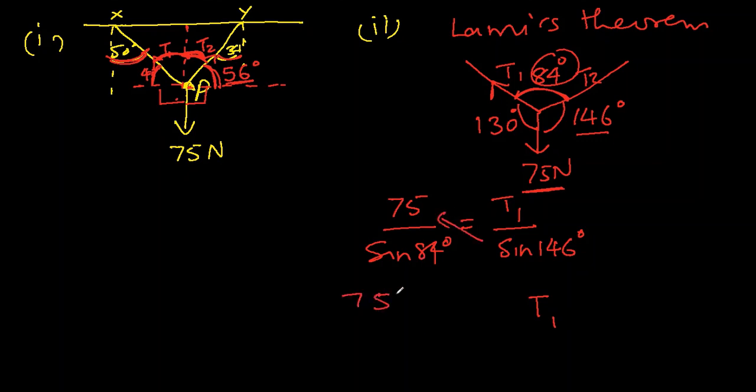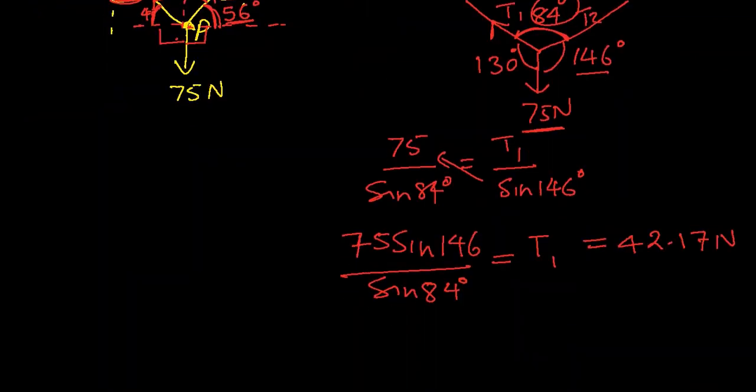T1 equals 75 sine 146 over sine 84. Let me find it using my calculator. Meanwhile, please subscribe to the channel so I prepare more videos for you in future. I got it as 42.17 newtons. They're saying nearest whole number, so this is 42 newtons. This will be tension 1.